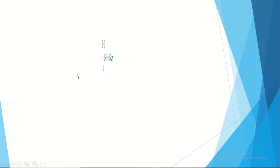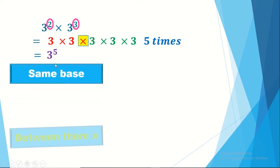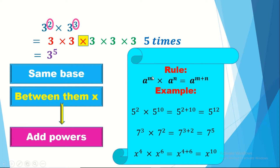Now let's start with the main rules of power. When we have the same base, for example 3 to the power 2 times 3 to the power 3, if we have multiplication between them we should add the powers. Let's prove it: 3 squared is 3 × 3, and 3 cubed is 3 × 3 × 3. Together we're multiplying 3 by itself 5 times, so it's 3 to the power 5. The general form: a to the power m times a to the power n equals a to the power m plus n.